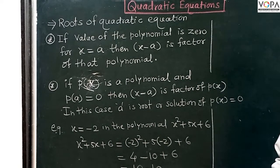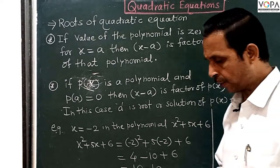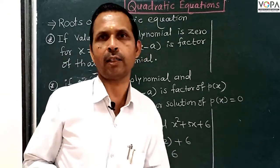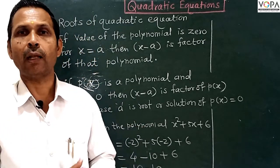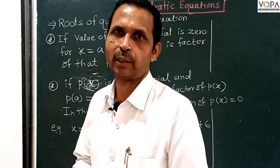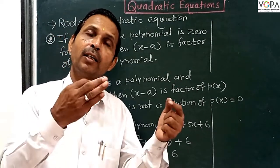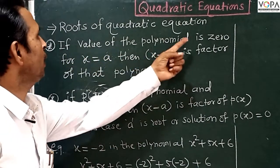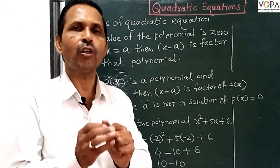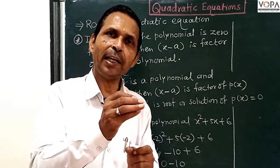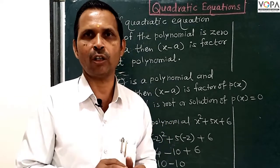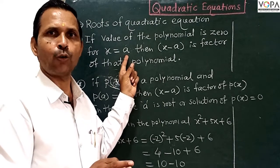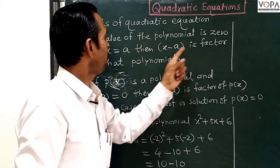A new topic: the root of a quadratic equation. We know that in an equation there are two sides, LHS and RHS. We have to put the root into the equation. In this polynomial, if the value of the polynomial is 0 for x equal to a, then x minus a is a factor of that polynomial.